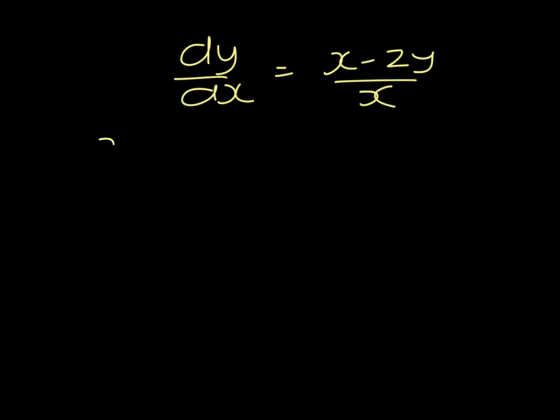To find the stationary point, that is when dy dx equals 0. So that will happen when x equals 2y. If we go back to the original equation,